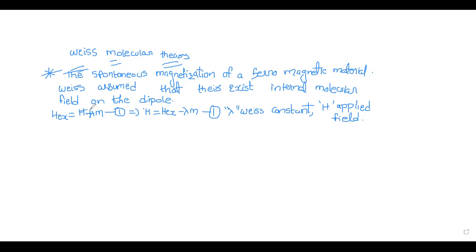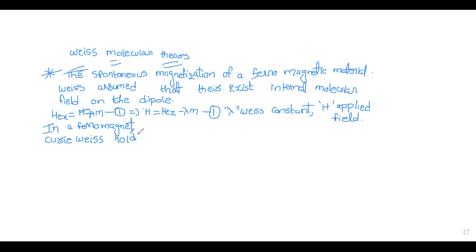In a ferromagnetic material, let us consider that the material obeys Curie-Weiss law. In a ferromagnetic material, Curie-Weiss law holds good. We are now going towards the basic derivation of Weiss molecular theory. We know that η = M / H_EX, where H_EX is the molecular exchange field.